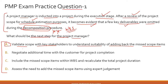Option B says: negotiate additional time with the customer for project completion. This is incorrect. You have identified a few key deliverables which were omitted — that is good — but you cannot go ahead and start negotiating an additional timeline with the customer, because the first question the customer will ask you is: how much more time do you need? And you don't have that answer because you have not done the assessment yet. On what basis will you approach the customer to ask for an extension of the deadline? That doesn't make sense, so option B is definitely incorrect.